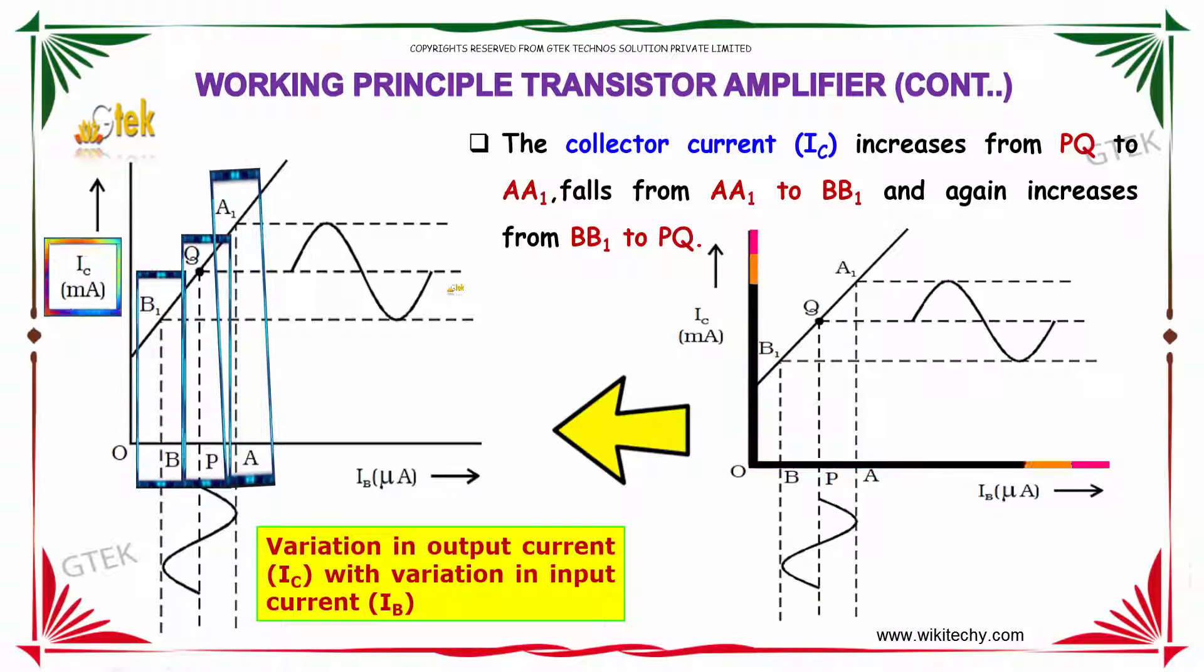The collector current IC increases from PQ to AA' and falls from AA' to BB' from here to here. And again increases from BB' to PQ. So it is having a cycle like this.